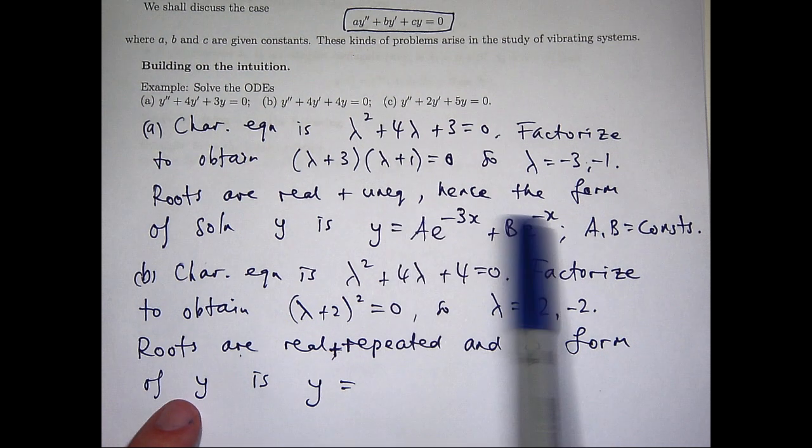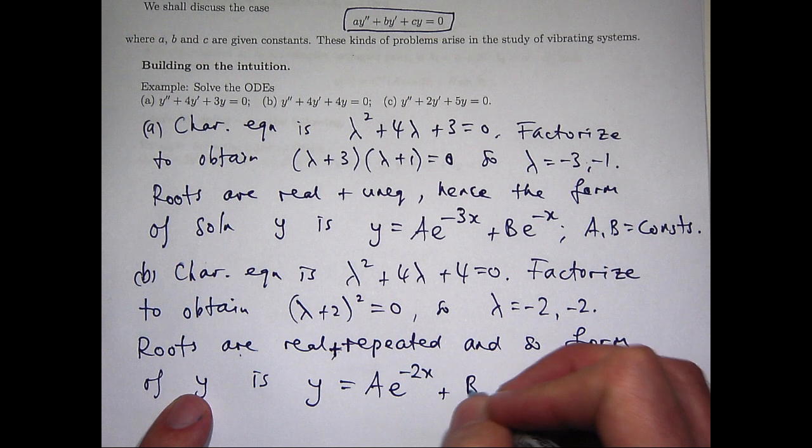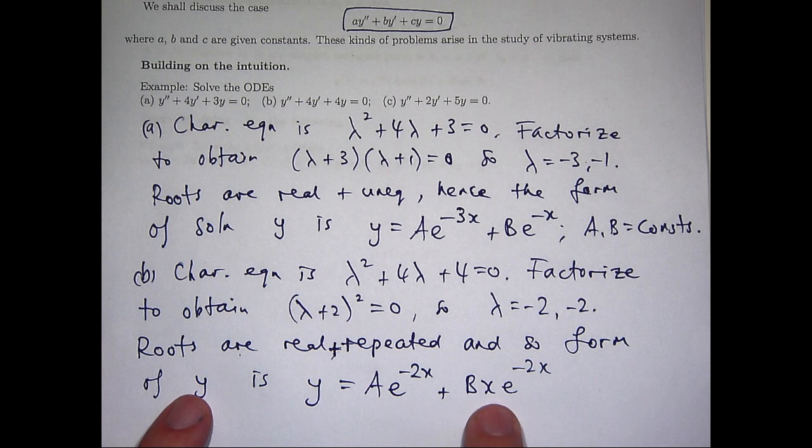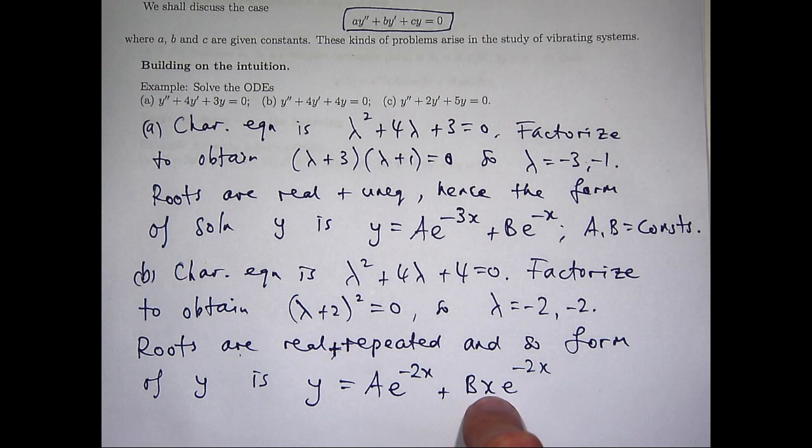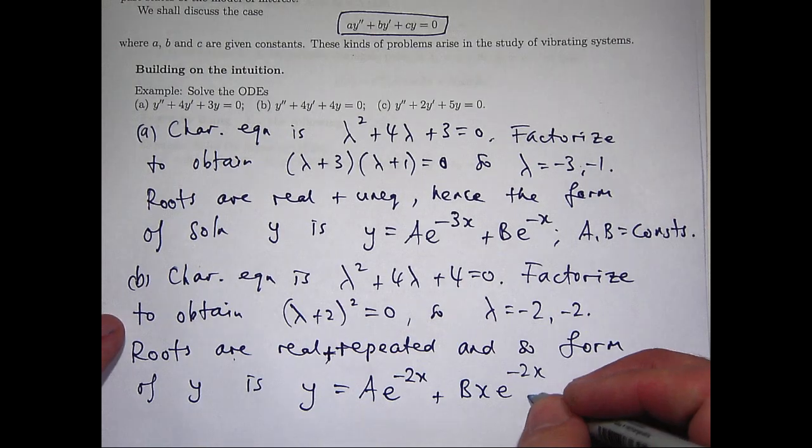Well it's similar to this, but not quite. It's exponentials, but with this extra factor of x in there. So whenever you solve the correct characteristic equation and you get repeated roots, then the general format will be something like Ae to the lambda x plus Bxe to the lambda x.